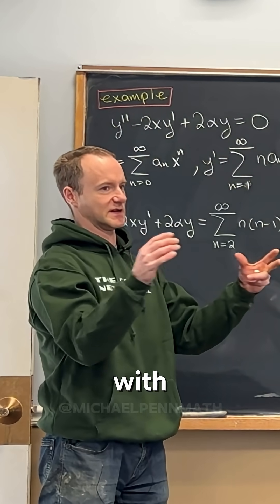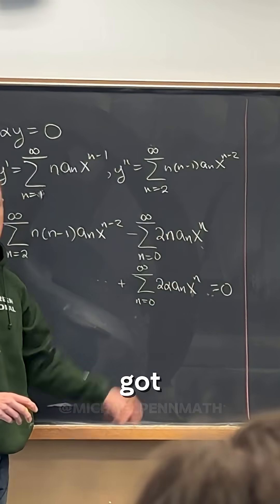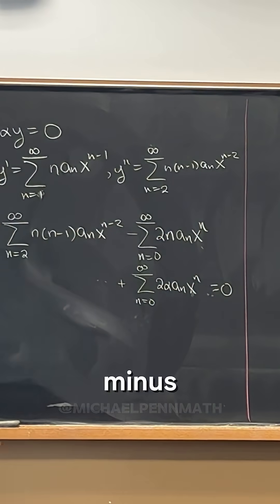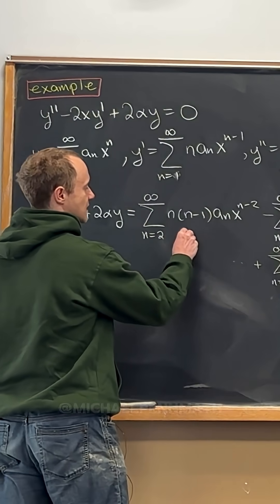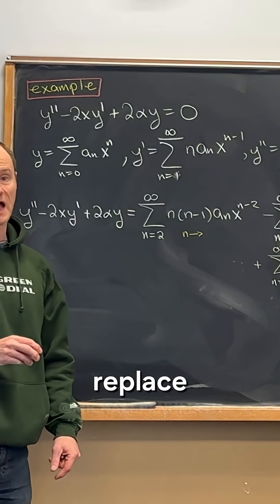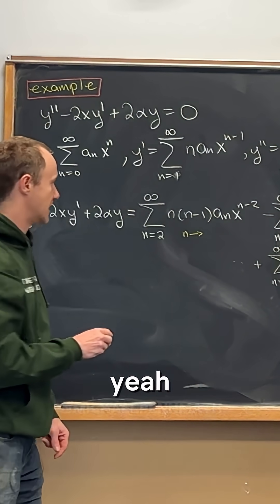So what do I do with my hands? So we've got x to the n, we've got x to the n, we've got x to the n minus 2. So what can we do to this x to the n minus 2 part to turn it into x to the n? We'll replace every n with what? Yeah, n plus 2.